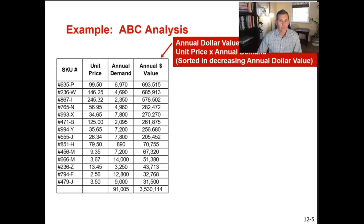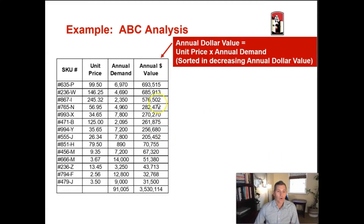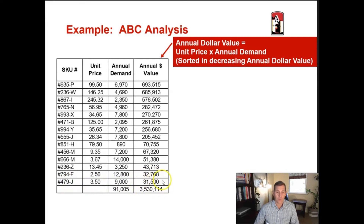The next step is to calculate annual dollar value by taking unit price multiplied by annual demand. In this example, the items are already sorted in decreasing annual dollar value. The top item, SKU 635-P, comes in at $693,000 — almost $700,000 worth of purchases. Working down the list, SKU 479-J is only $3.50 each with 9,000 bought per year, for a total annual dollar value of $31,500. When you add up all 14 items, you get $3.5 million in total annual purchases.